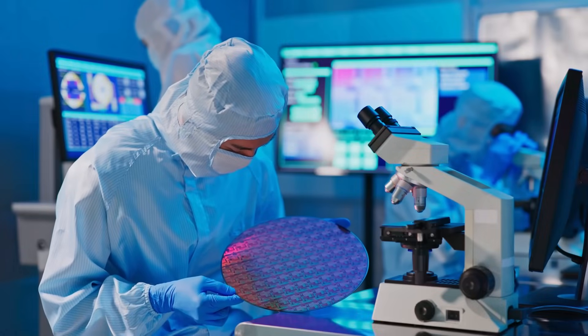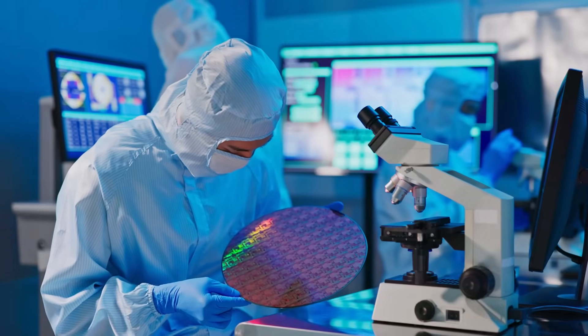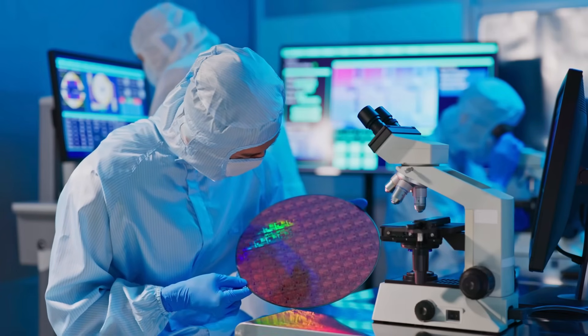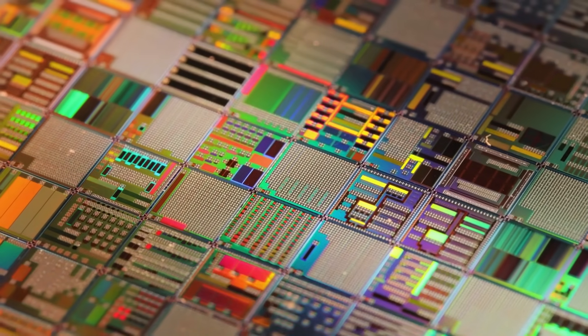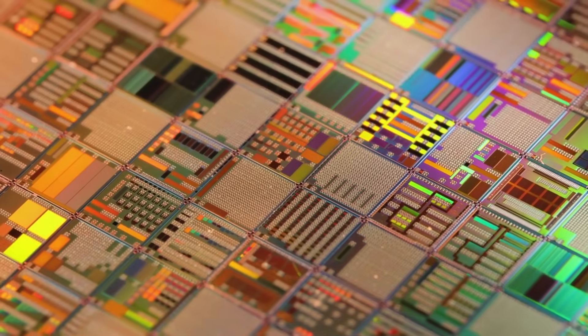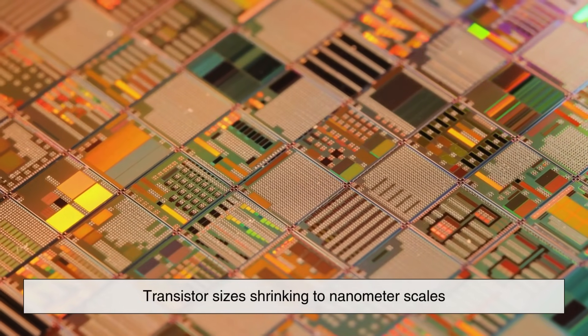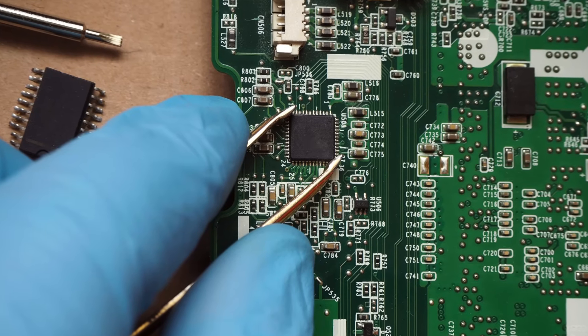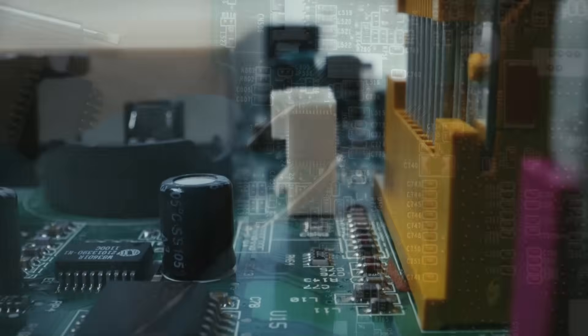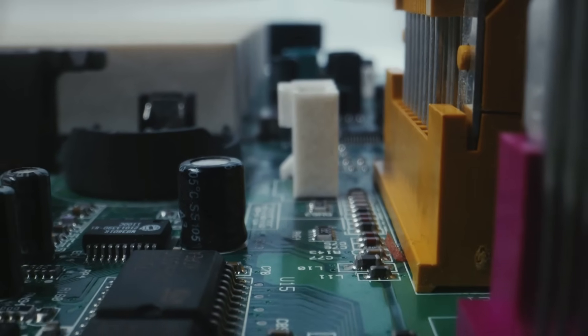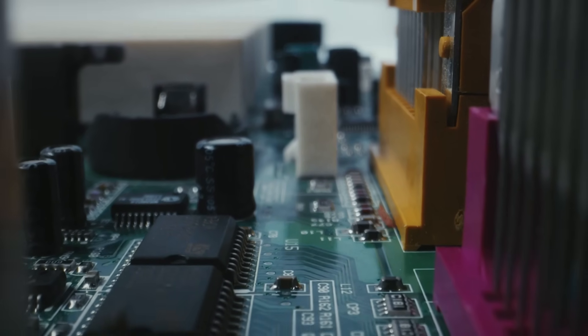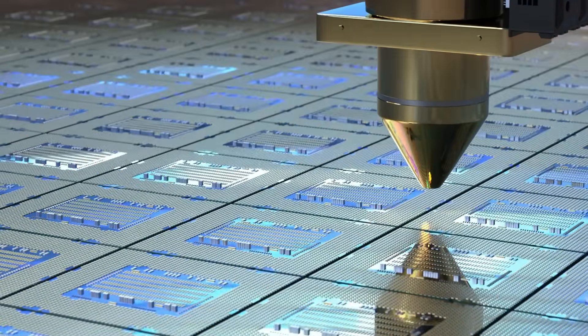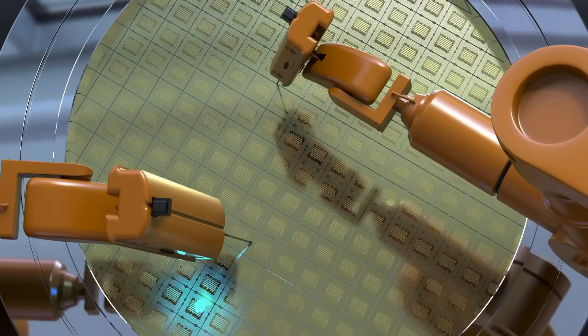The entire semiconductor manufacturing process can take several months, with each wafer undergoing hundreds of steps before becoming a functional chip. The industry is constantly pushing the limits of miniaturization, with transistor sizes shrinking to nanometer scales. Cutting-edge chips today contain billions of transistors packed into an area smaller than a fingernail, allowing for the incredible computational power found in modern devices. This level of precision and complexity requires state-of-the-art facilities, massive investments, and a highly skilled workforce.